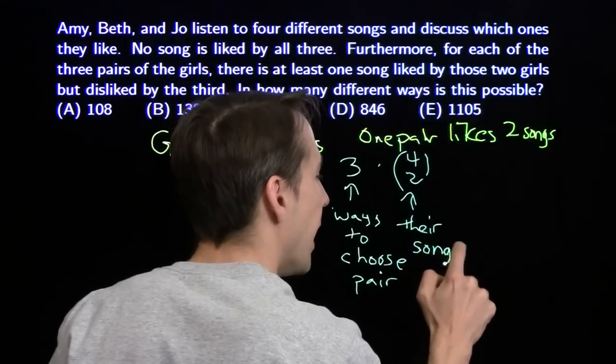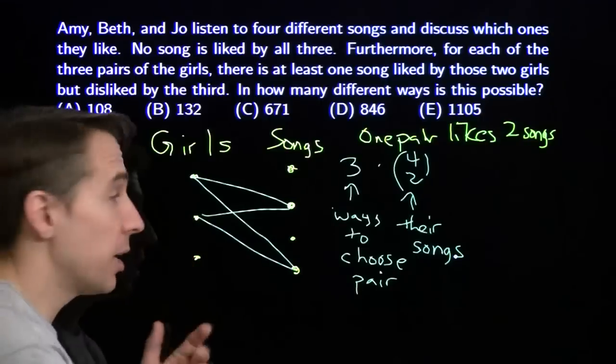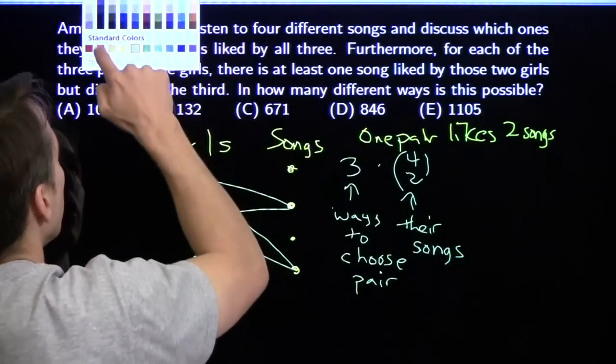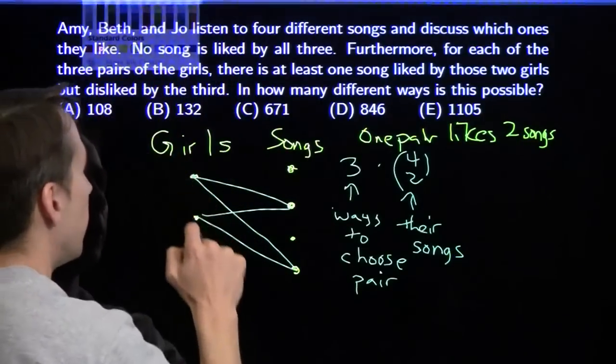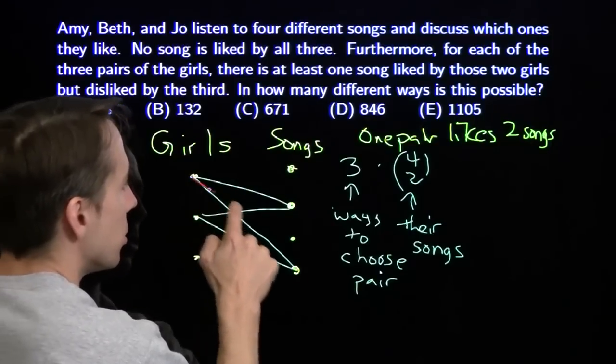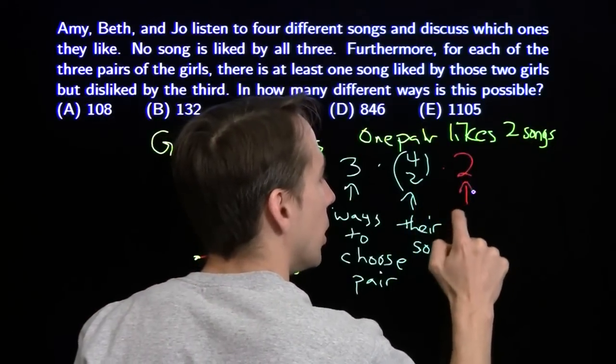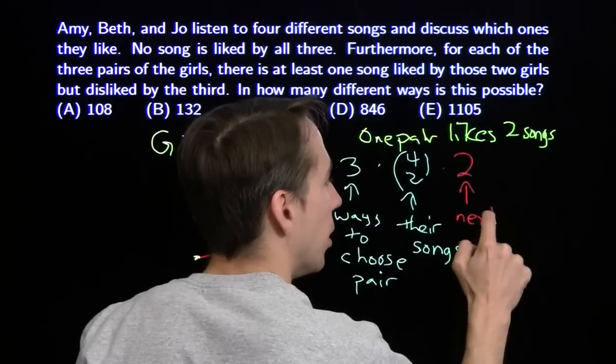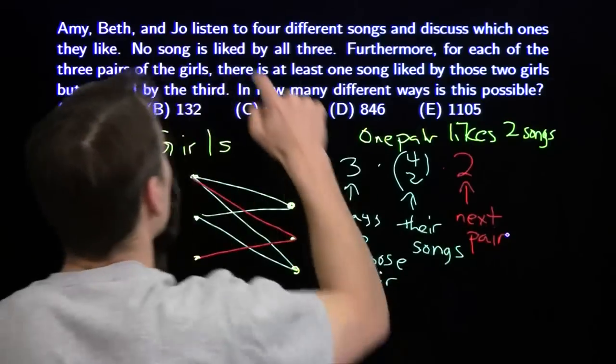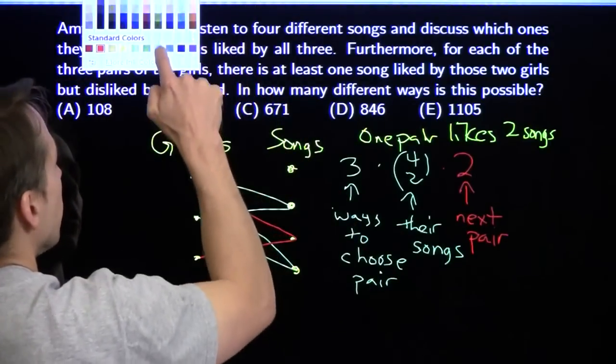Now, once we've done that, we've got two remaining pairs of girls. Each one has to get a song. So the first pair has two choices. And then, of course, the remaining pair just gets that last song that hasn't been chosen yet.